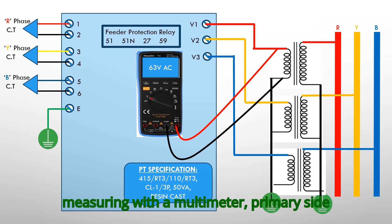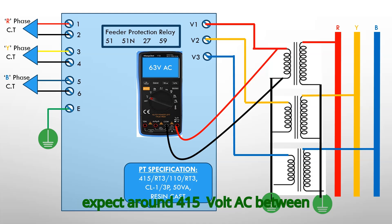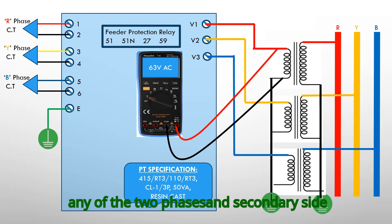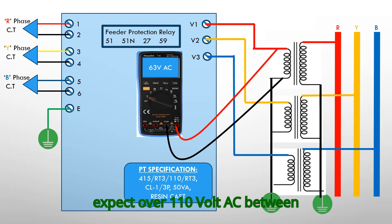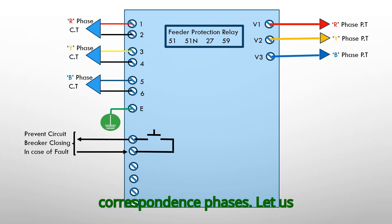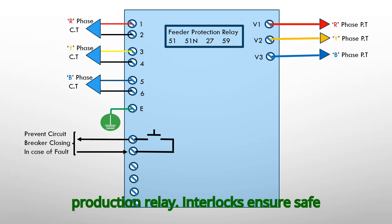When measuring with a multimeter, on the primary side expect around 415V AC between R-Y, Y-B and B-R phases. On the secondary side expect around 110V AC between the corresponding phases. Let us explore the interlocks within the feeder protection relay.